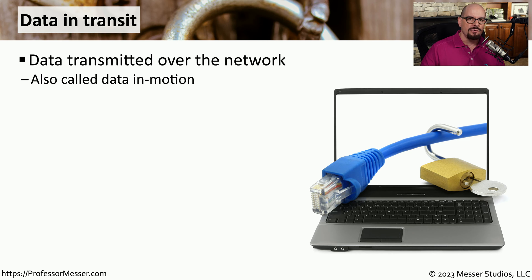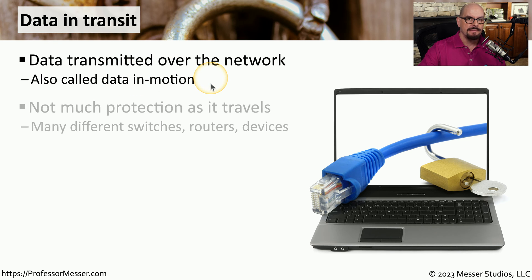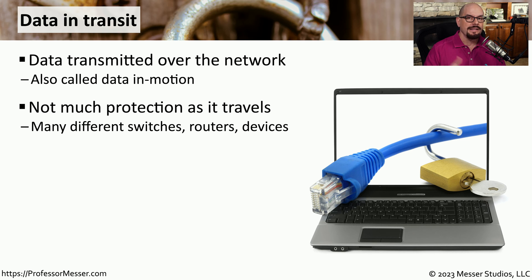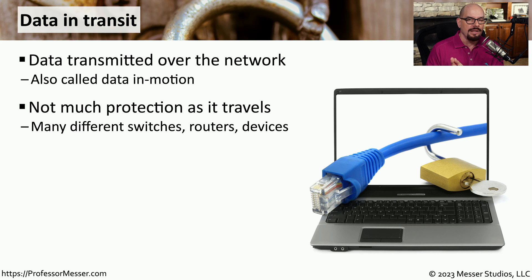If you're transferring information across the network, we refer to that as data in transit, sometimes called data in motion. If the data is not encrypted as it traverses the network, there's relatively little to protect it from somebody tapping into that network link and seeing your data. So as it goes through switches, routers, firewalls, and other devices, you want to ensure you're providing proper encryption or other types of security.